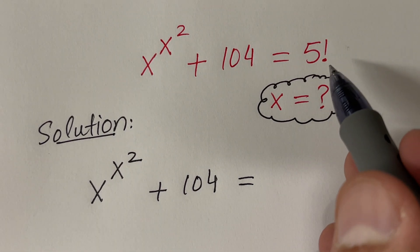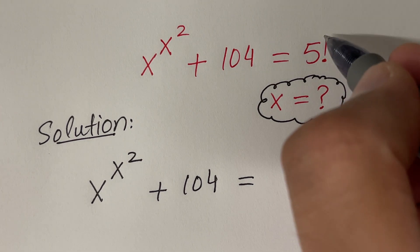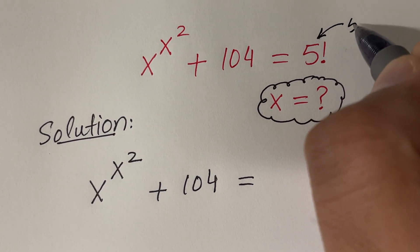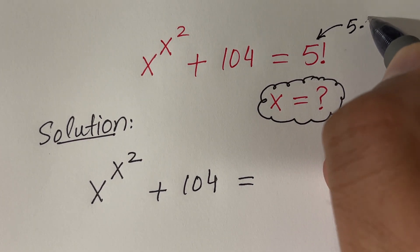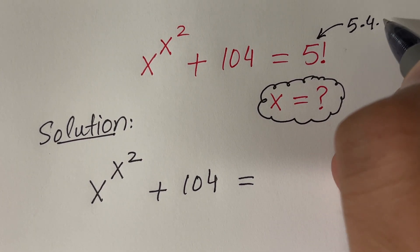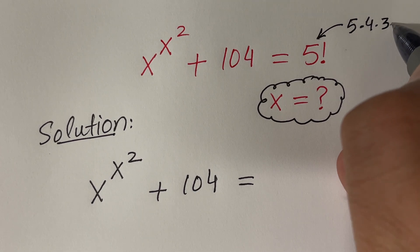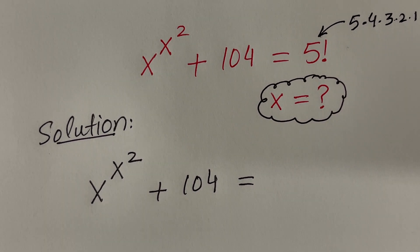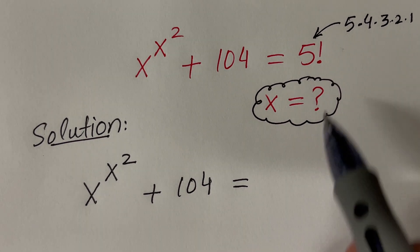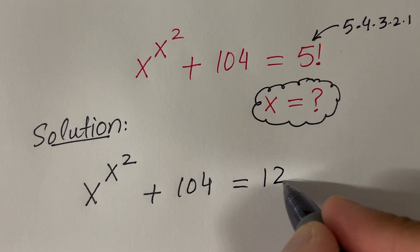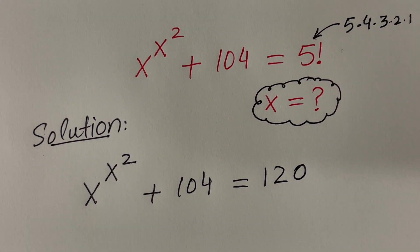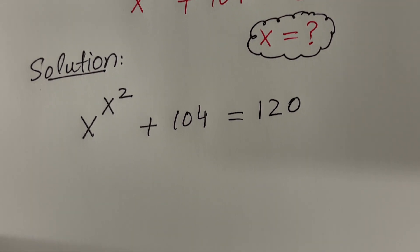Factorial of any number means the product of all numbers less than and equal to that number. So if you multiply all those numbers, you get 120.